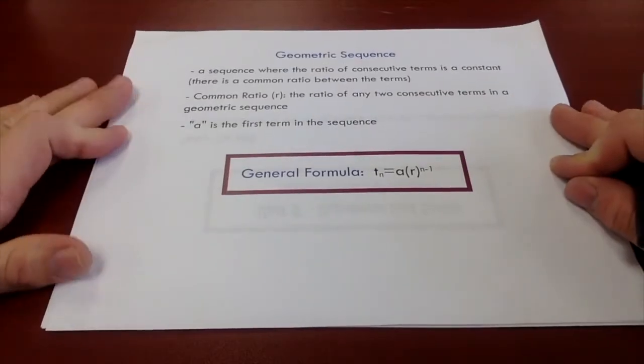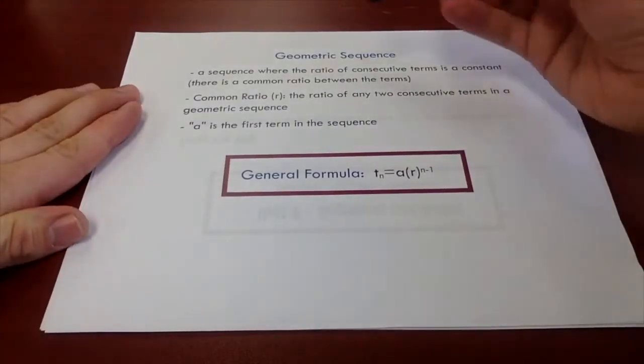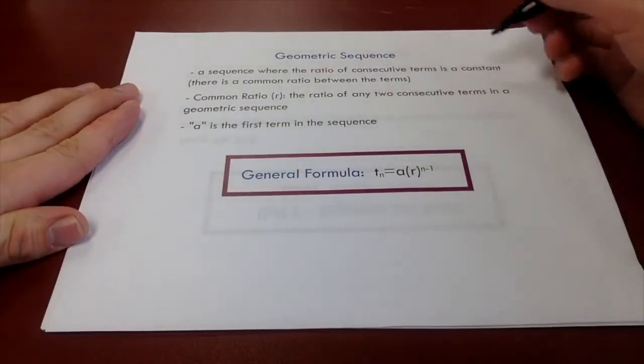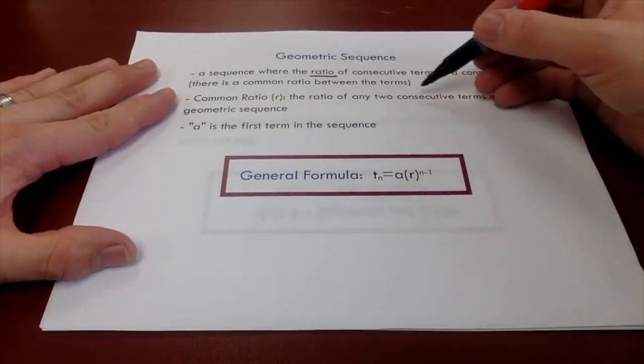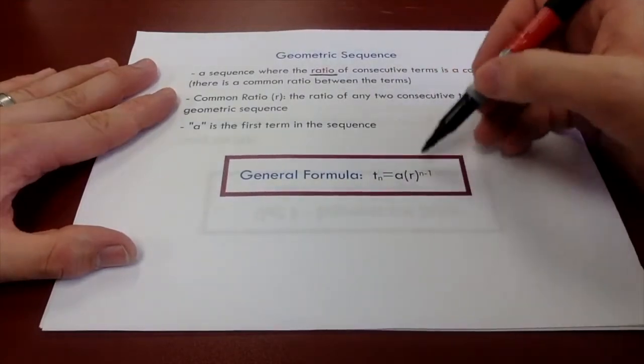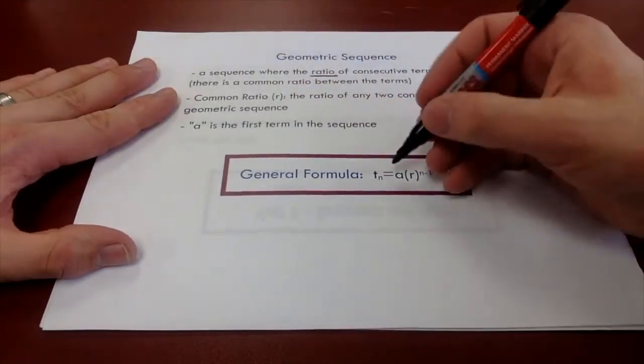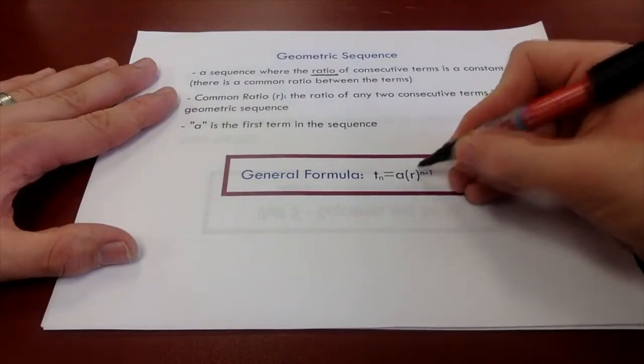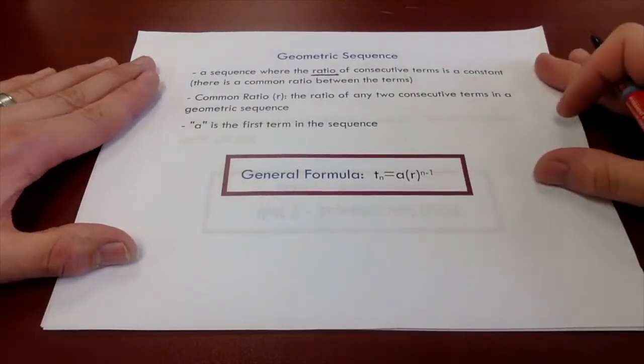So geometric sequence, this is just a sequence where the ratio of consecutive terms is a constant. A common ratio we can define as the ratio of any two consecutive terms in a geometric sequence. In our general formula here we use a as the first term. R just tells us the common ratio between any two consecutive terms in our sequence.